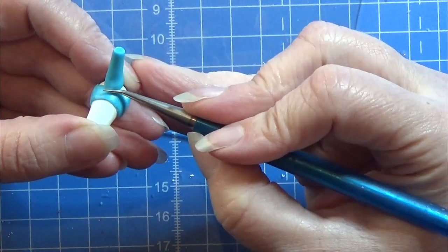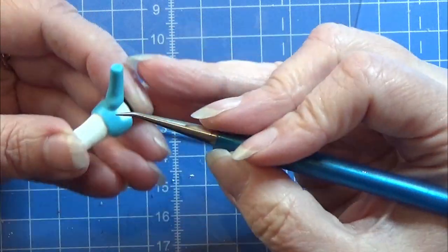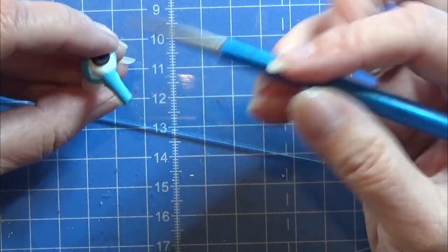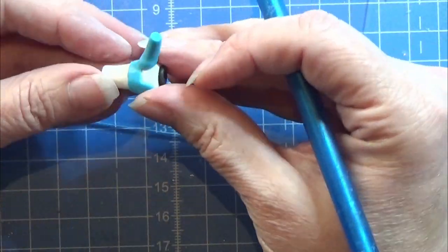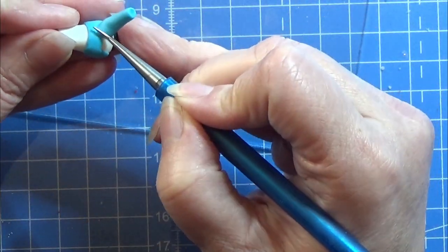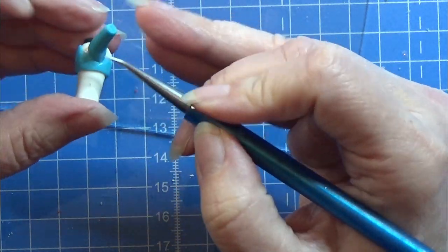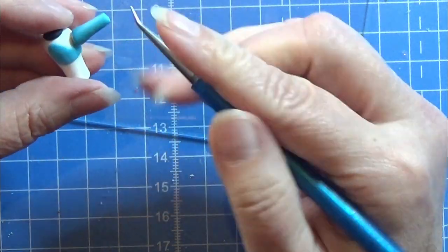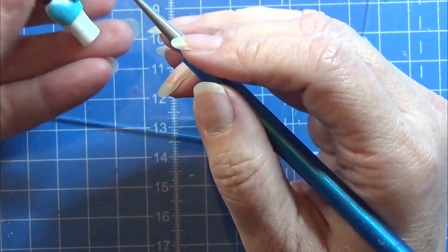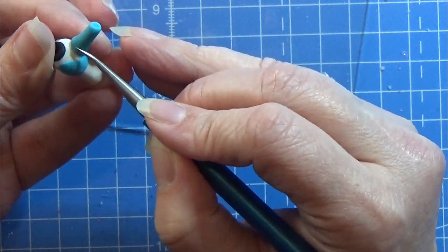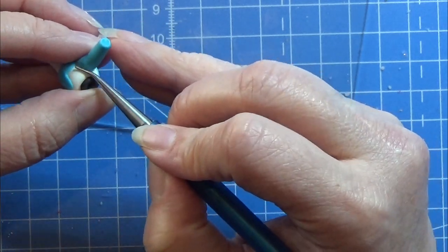Now I'm just going to smooth in the connection between the clays here. I'm using some bake and bond on the white part, making sure everything will be sticking really well together when it has been baked.